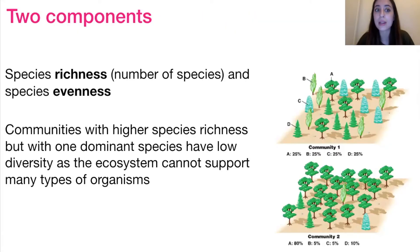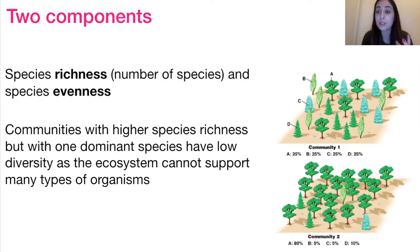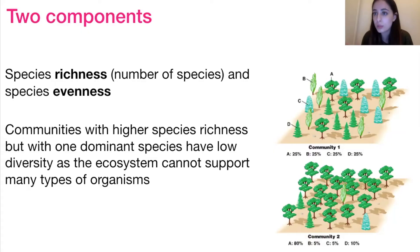The two components that make up species diversity are species richness — the number of different species — and how even they are. In community one, we have pretty much exactly even proportions: 25% each of species A, B, C, and D. Whereas in community two, one species is really dominating — species A makes up 80% of the population. Community one shows a more stable ecosystem because the habitat sustainably provides for four different species equally, without one species vastly dominating.